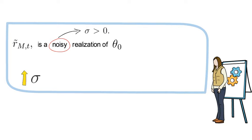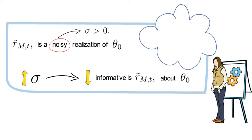Now the larger sigma, the less informative is the received signal, r tilde m, about the sent signal, theta-0. Now an engineer would try to build a very precise sensor to set the sigma to zero.